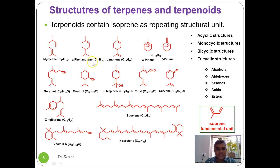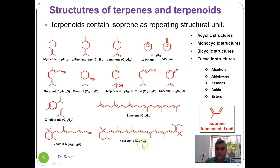Looking at all these examples of terpenes, we find that they contain carbon atoms in multiples of 5. Isoprene is the repeating unit and contains 5 carbon atoms. Myrcene contains 10 carbons, zingiberene contains 15, vitamin A contains 20, squalene contains 30, and beta-carotene contains 40 carbon atoms. Terpenoids are made up of isoprene units, and their carbon count depends on how many isoprene units they contain.